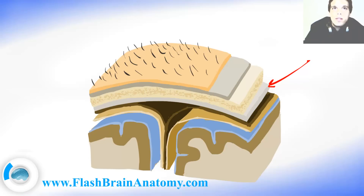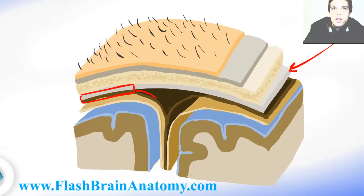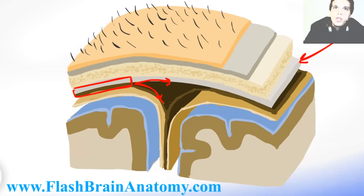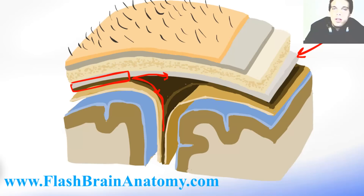Now look at this. You had both layers here, intact, attached to each other. But here they separated. The meningeal layer goes down and the periosteal layer stays with the bone. So does the meningeal layer from the other side. And here they create the cerebral falx. And this empty space over here is the sinus.